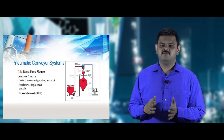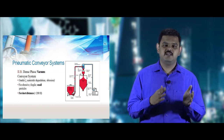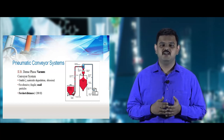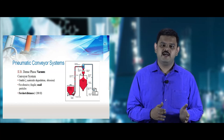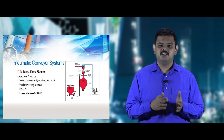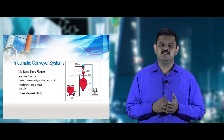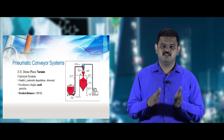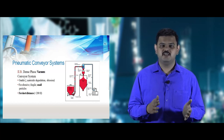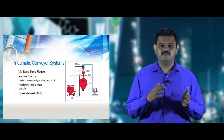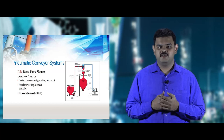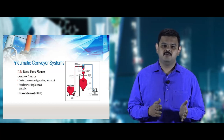Dense phase vacuum pneumatic conveyors transfer materials with the help of vacuum pull. The vacuum pull is of short duration. Toxic materials that are highly denser than dilute materials are transferred from multiple destinations to a single source. Because of their compressible and toxic natures, dense phase vacuum pneumatic conveyors are used, though they cannot transfer materials over long distances.